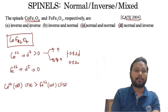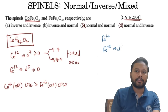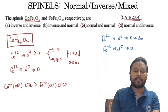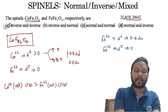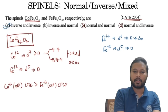For Fe₃O₄ (the second part): Fe²⁺ is d6 (CFSE = 0.4Δₒ) and Fe³⁺ is d5 (CFSE = 0). The dipositive cation has higher CFSE, so this is also an inverse spinel. Therefore both CoFe₂O₄ and Fe₃O₄ are inverse spinels. The concept is very simple once you know the rules.